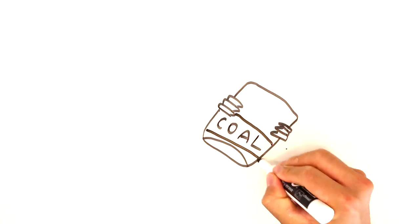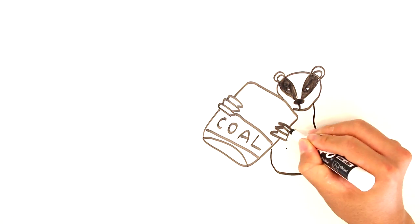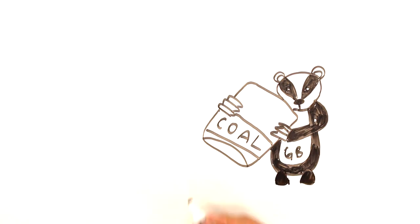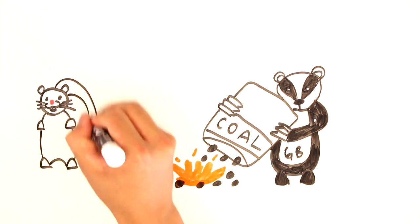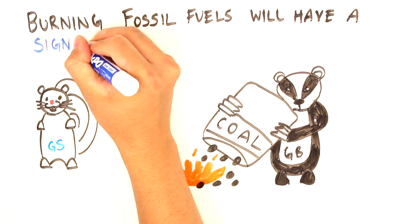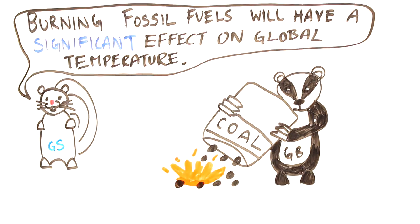In our first example, GrammarSquirrel is telling GrammarBadger that burning fossil fuels will have a significant effect on global temperature. Unsurprisingly, GrammarBadger don't care, GrammarBadger don't give a shit.